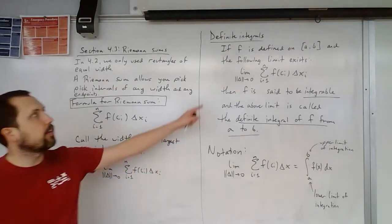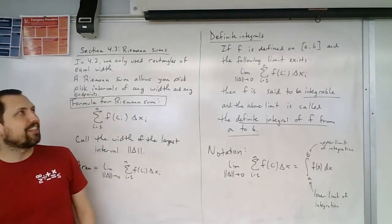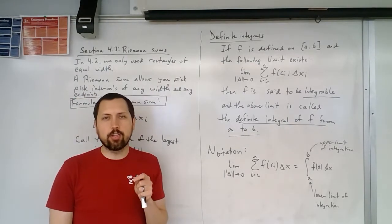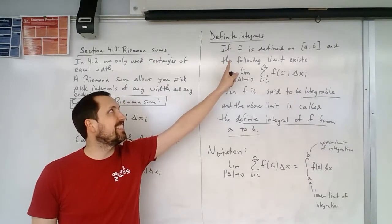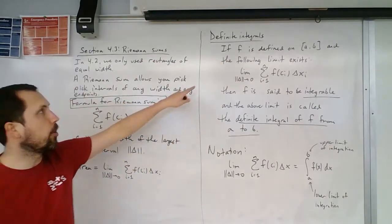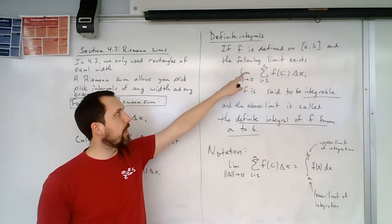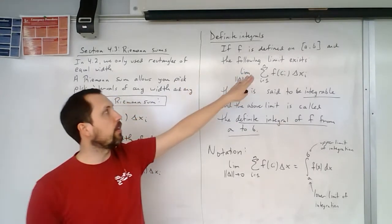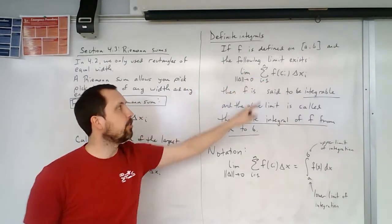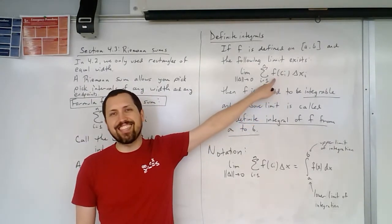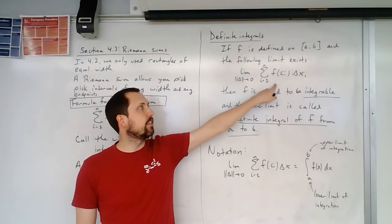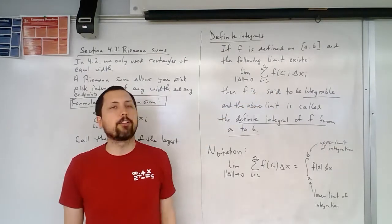So now we're going to define what's called a definite integral. So we've already defined integrals. We talked about this indefinite integral before. Now we're going to talk about definite integrals. So if F is defined on the interval from A to B, including the endpoints, then the following limit exists. So this limit that we're defining over here is basically, if this area exists underneath this curve, this limit exists, then F is said to be integrable.